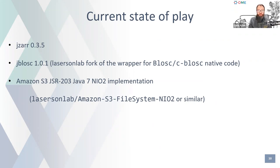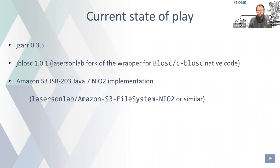There's obviously a lot of work from a lot of groups, largely scratching their own itch — doing their own science or satisfying their own users. That's led us to where we are today. The most thorough Java implementation with good support, reasonable documentation, and a fairly cohesive Zarr-focused implementation is JZarr with JBlosc — using the Lasersen Lab fork of the wrapper — and the CBlosc native code, plus a JSR-203 NIO2 implementation.